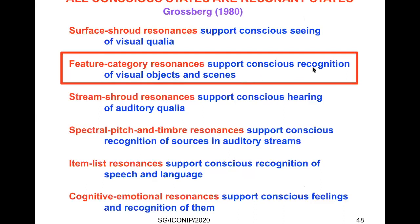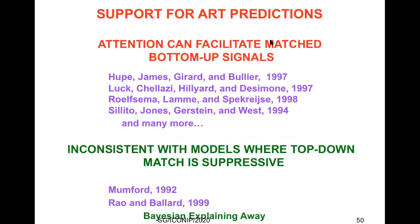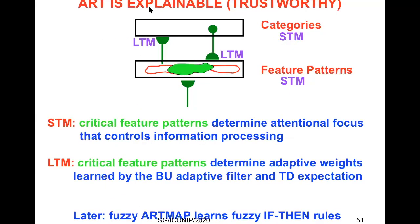I've done considerable work showing that all conscious states are resonance states, and feature-category resonances support conscious recognition of visual objects and scenes. There is substantial data supporting ART predictions — attention does have an on-center off-surround circuit behind it, and attention can facilitate matched bottom-up signals. ART is explainable and trustworthy because in short-term memory, critical feature patterns determine the attentional focus controlling information processing, and you can simply read off what those features are. In long-term memory, critical feature patterns determine the adaptive weights learned by the bottom-up adaptive filter and top-down learned expectation, so you know what these weights are encoding.